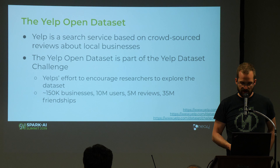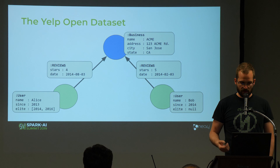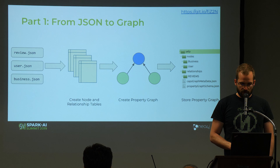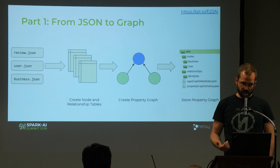Yelp is a local search service. The dataset is available online and contains users with properties who write reviews about businesses that also have properties, and the reviews themselves have properties. It's a property graph, and we focus on a snapshot of what such a graph could look like.